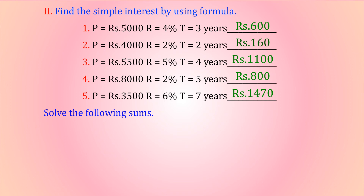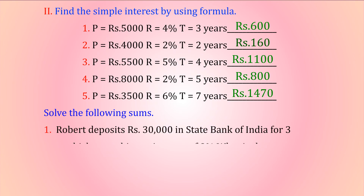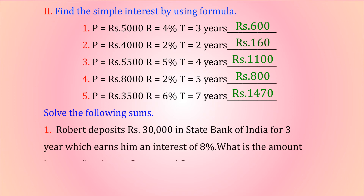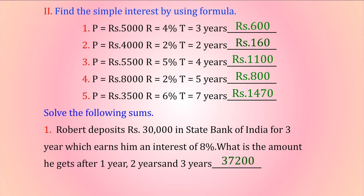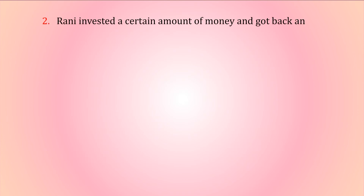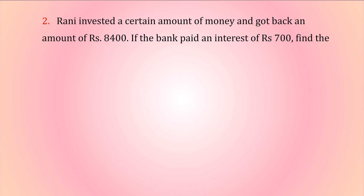Solve the following: Robert deposits ₹30,000 in State Bank of India for three years which earns him an interest of 8%. What is the amount he gets after one year, two years, and three years? Rani invested a certain amount of money and got back ₹8,400. If the bank paid an interest of ₹700, find the amount Rani invested.